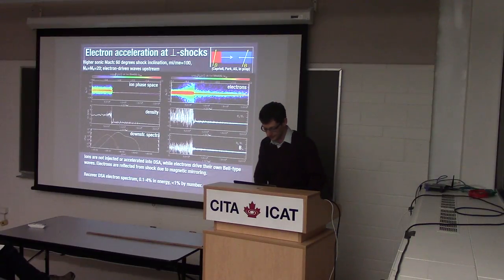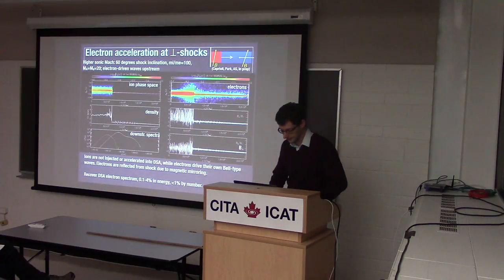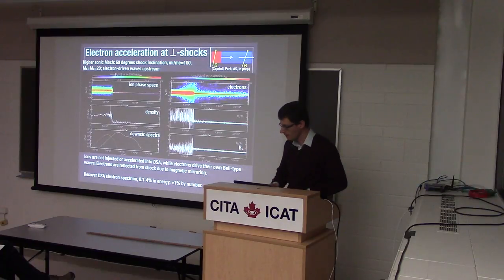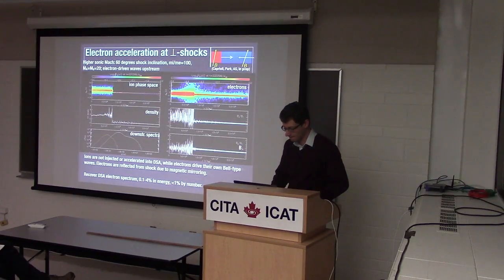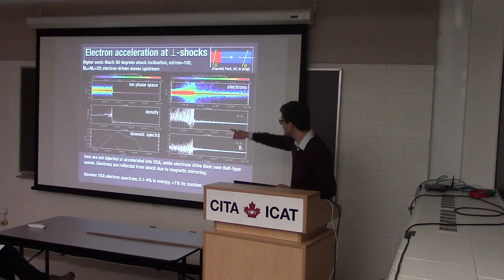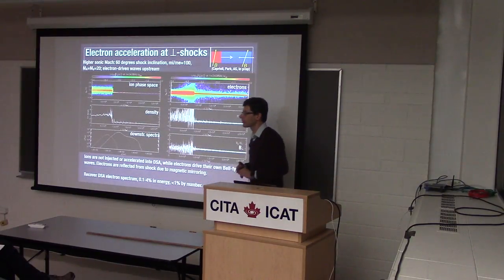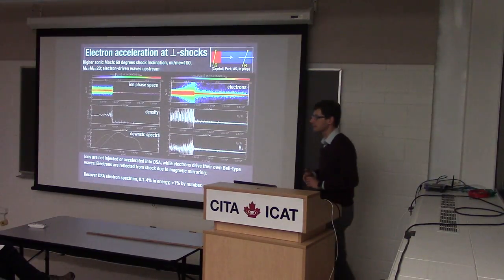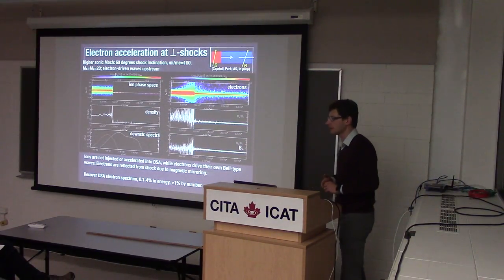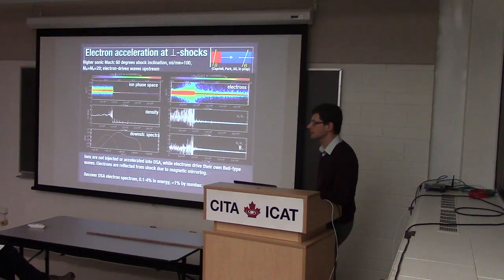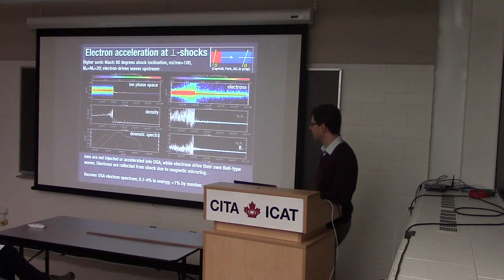Audience question: When you see these loops in a typical supernova, what would be the actual spatial and time scale associated? Answer: These are gyrations. The time scale is probably minutes.